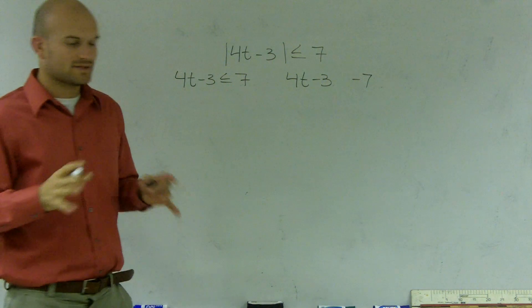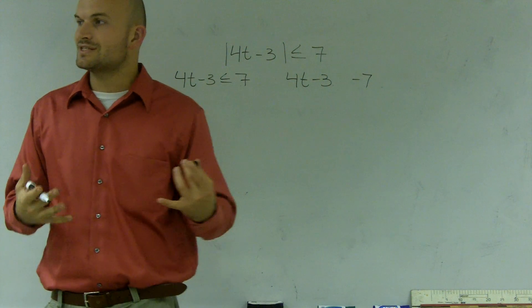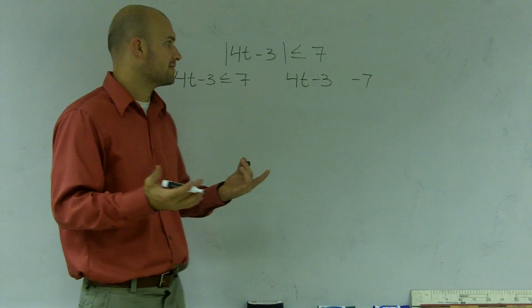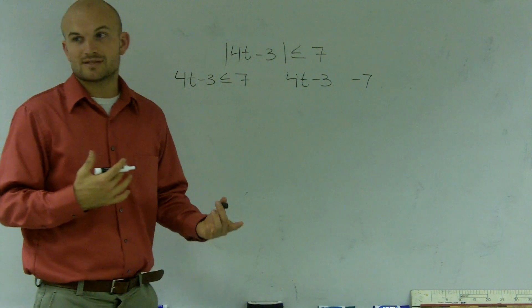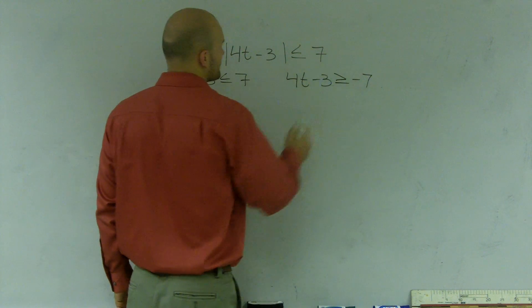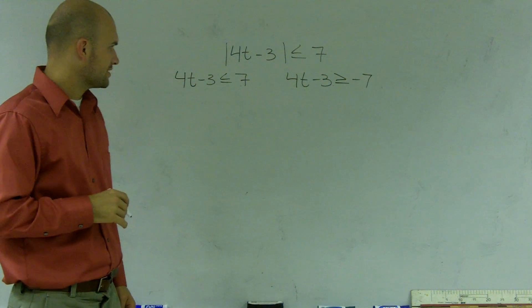But be careful. Remember, when we're dealing with inequalities, if we're going to be changing signs by multiplying or dividing by negative 1 on both sides, we always have to change the signs. Well, that's exactly the same thing that's true with absolute value inequalities. So therefore, this is going to be greater than or equal to.